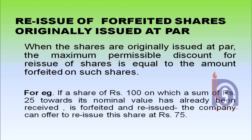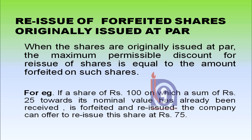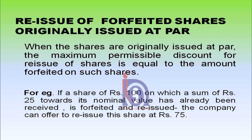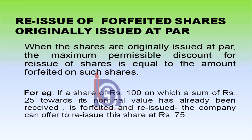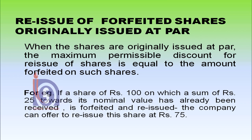First is reissue of forfeited shares which have been originally issued at par. When the shares are originally issued at par, the maximum permissible discount for the reissue of shares is equal to the amount forfeited on such shares. For example, if a share of rupees 100 on which a sum of rupees 25 towards its nominal value has already been received is forfeited and again reissued, then the minimum price for reissuance can be rupees 75 because 25 was already collected.